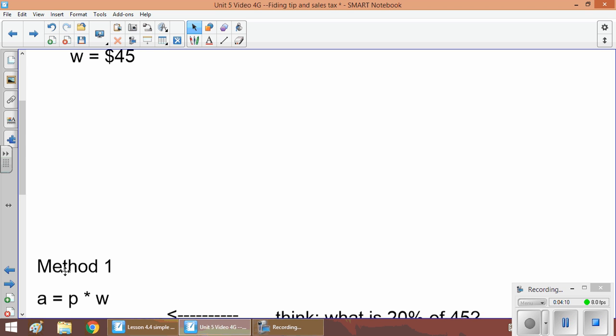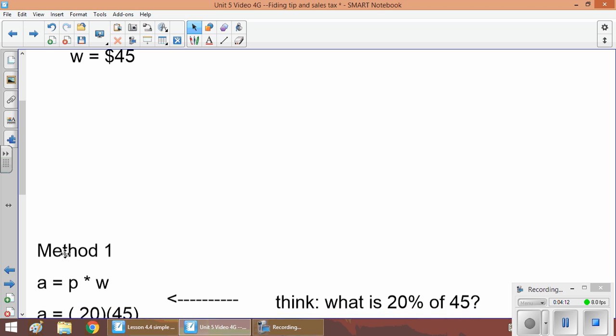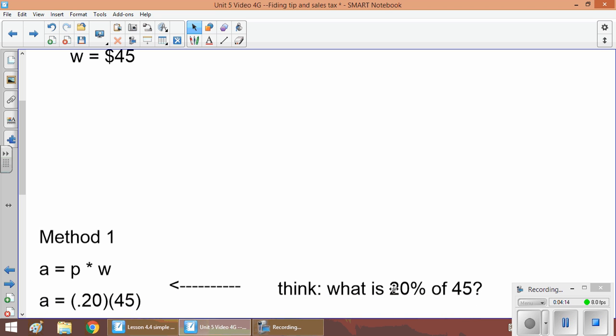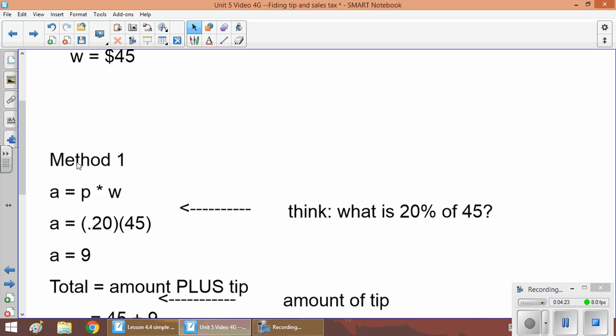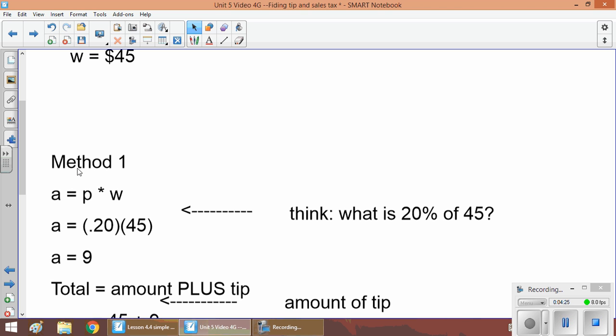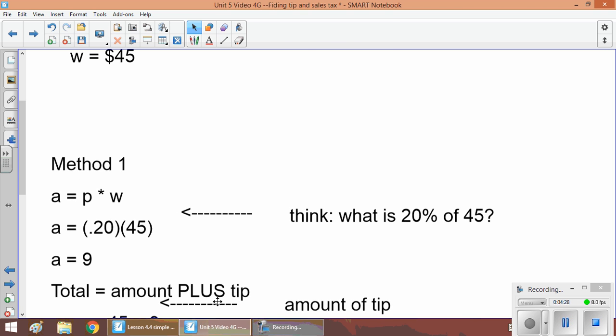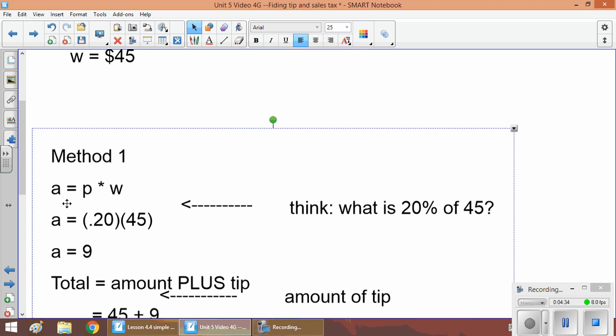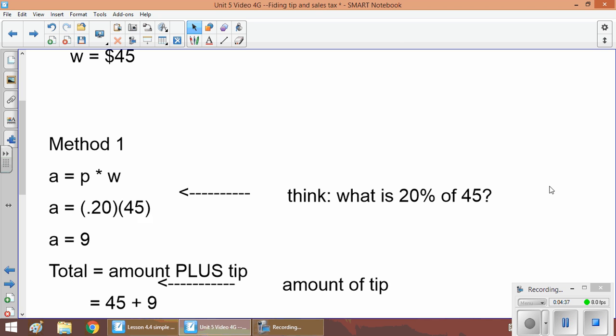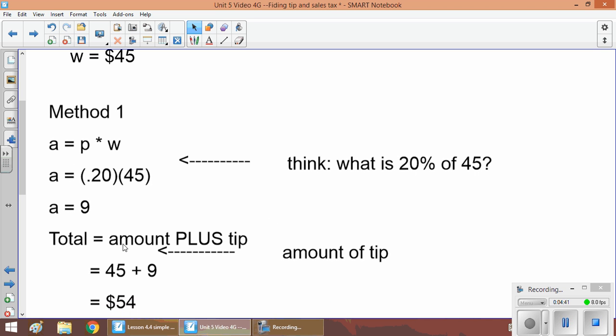So here's Method 1. a = p × w. a = our 20%, 0.20 × 45. So if you put that into your calculator, you get a = 9. So remember, the total equals the amount plus the tip. So what we're going to do is take our amount of 45 and add 9 to it. So 45 + 9 is 54.